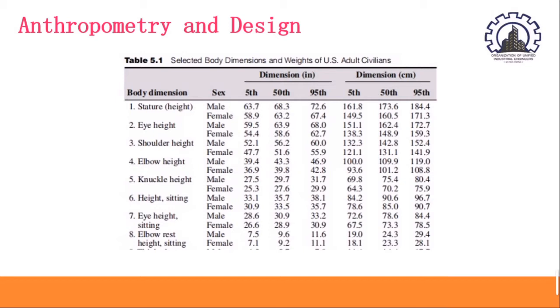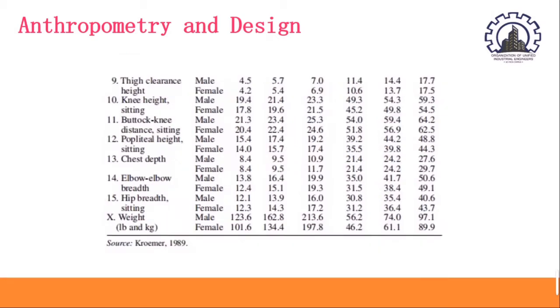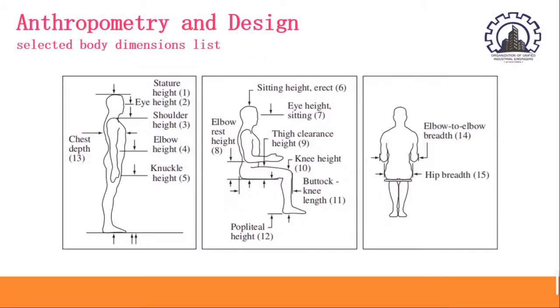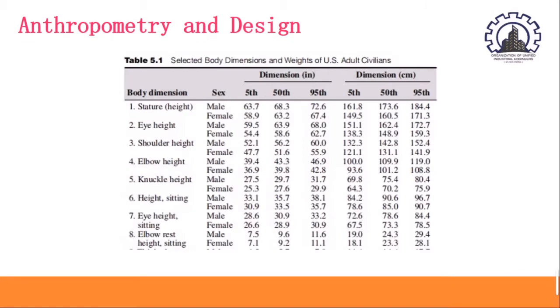This is a selected body dimensions and weights of U.S. adult civilians, where these parts were actually surveyed and measured to gain an average of the 5th percentile, the 50th percentile, and the 95th percentile. But the goal here is to know the minimum, which is the 5th percentile, and the maximum, 95th percentile, of the stature or posture's body dimensions that are observed in a specific population.